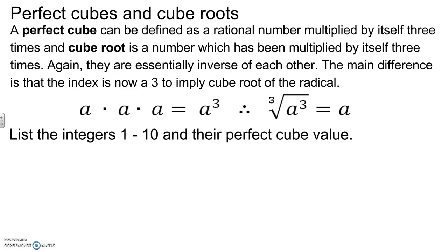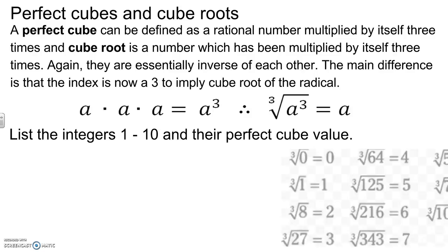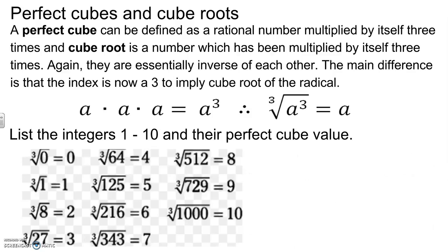List the integers 1 through 10 and their perfect cube values. Take a moment to write these down. For example, 1 times 1 times 1, that's 1. 2 times 2 times 2, and keep going from there. We should have been able to come to at least a thousand, though some numbers in between might have been more challenging. You might need to use the calculator for this.